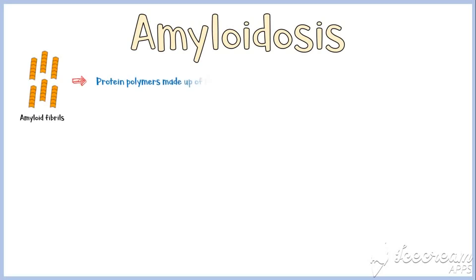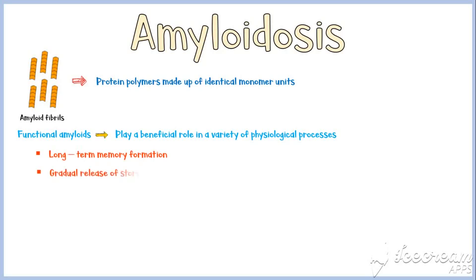Amyloid fibrils are protein polymers made up of identical monomer units. Functional amyloids play a beneficial role in a variety of physiological processes, for example, in long-term memory formation, gradual release of stored peptide hormones, etc.